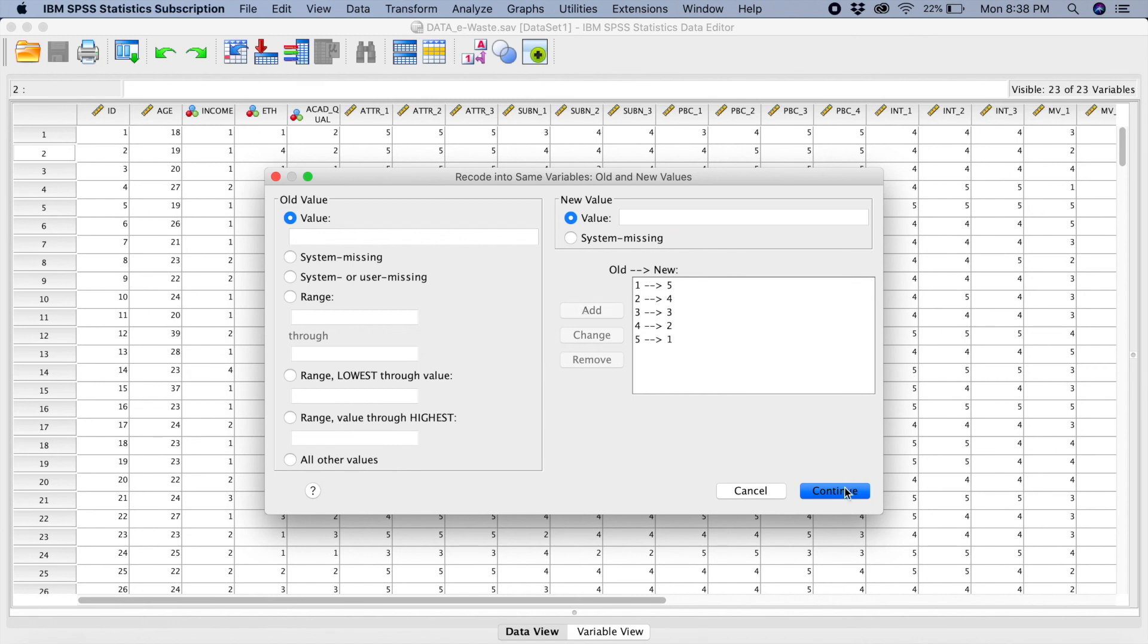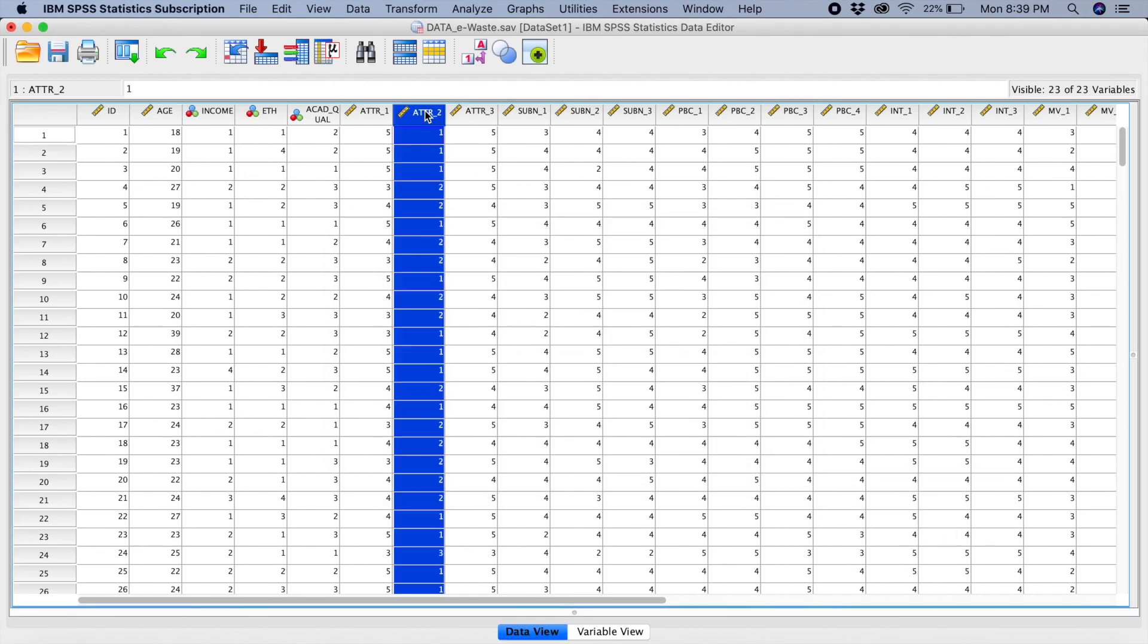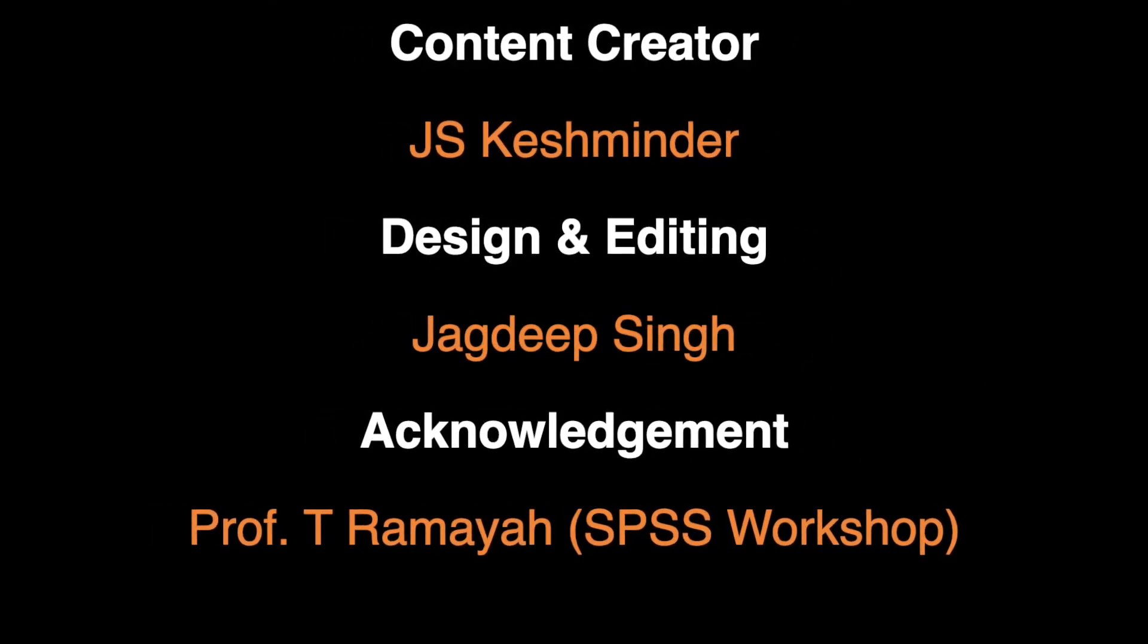So what you do? You go to continue. And at this point here, you would click OK. So now automatically, your variable ATTR2 is already reverse coded.